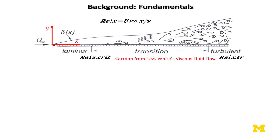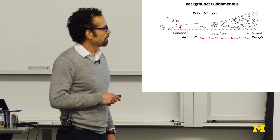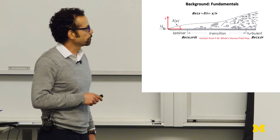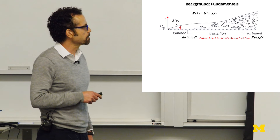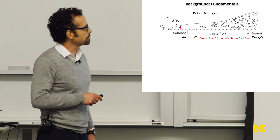I would like to start with this cartoon of flow past a flat plate, which everybody should have seen in their undergraduate fluid mechanics. In this situation, because of viscosity, we get this layer of fluid right near the surface where the flow velocity changes from the no-slip condition at the wall all the way to the free stream over a thickness delta, which is known as the boundary layer.